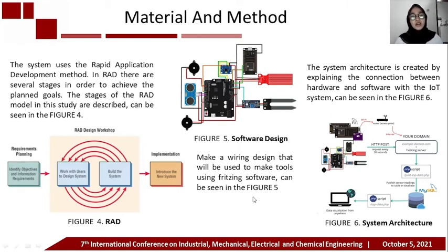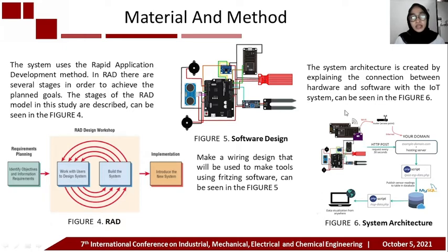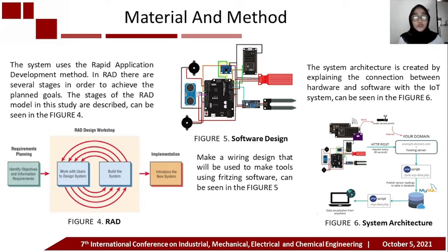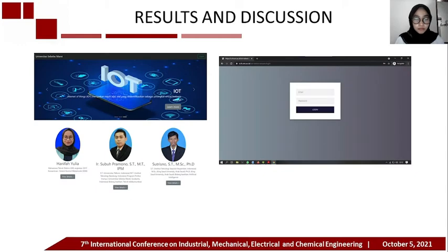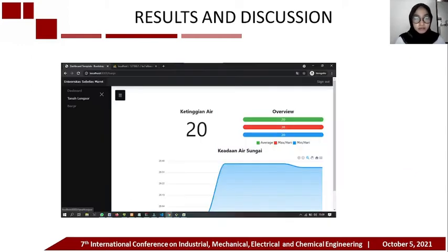Next, a wiring design is made that will be used, as shown in Figure 5. Next, the system architecture is created by explaining the connection between hardware and software with the IoT system, which can be seen in Figure 6. Next, the web display on the home page and working page, and the following is a web design.